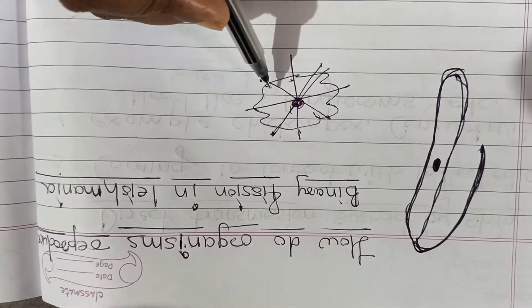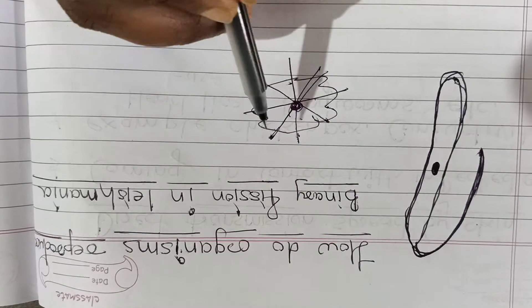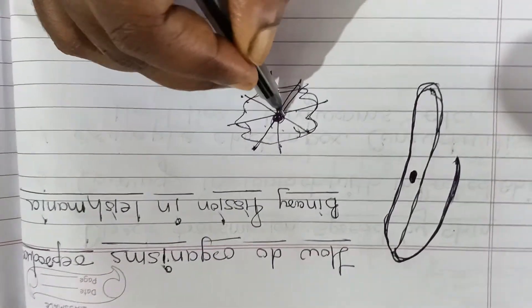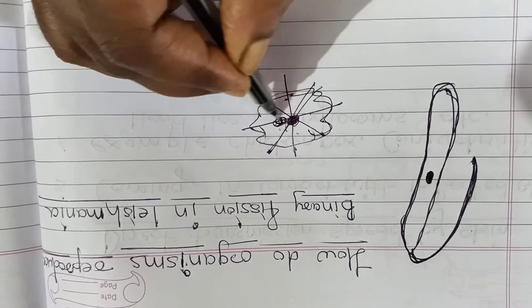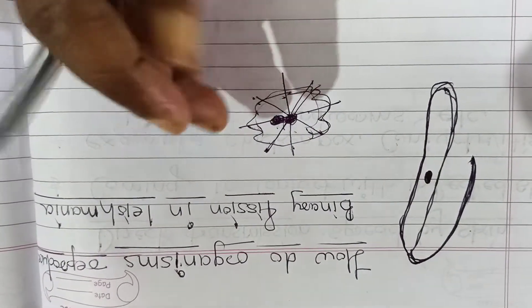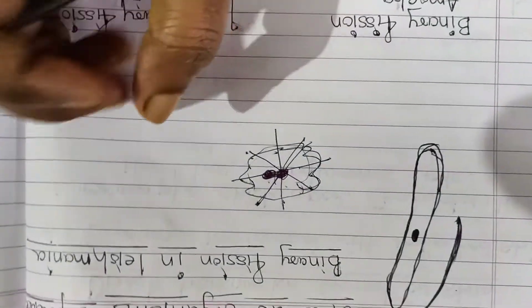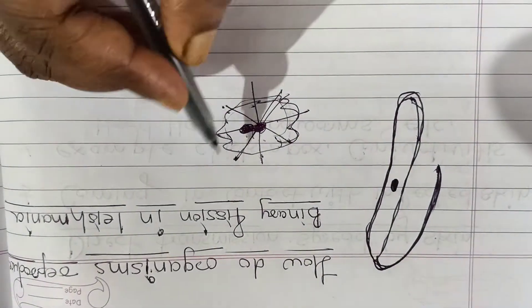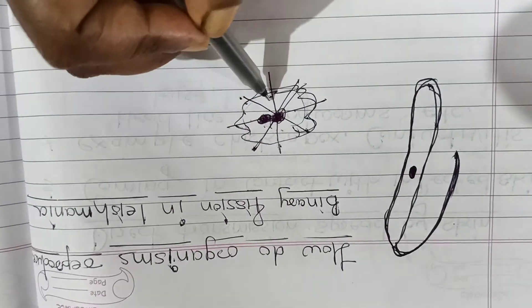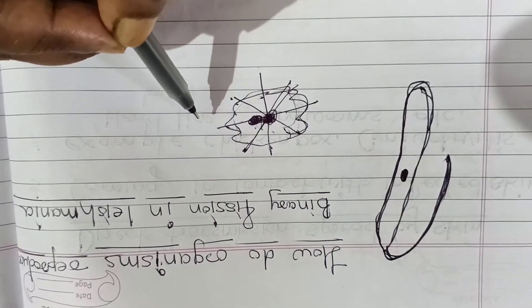Because body organization is less in amoeba, in binary fission whenever one amoeba is there, it starts dividing — whenever its nucleus divides first, it elongates, then cytoplasm elongates and then two different daughter amoebas are formed. First nucleus divides, and because of the less body organization it does not divide in a proper orientation.